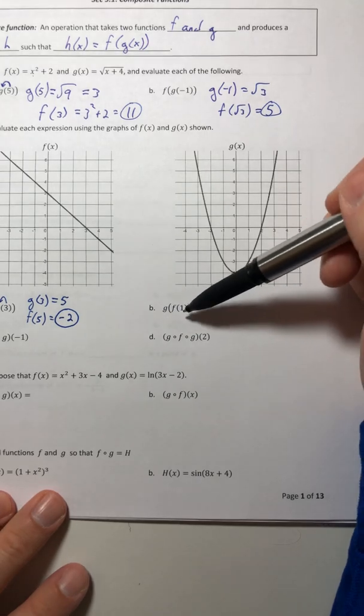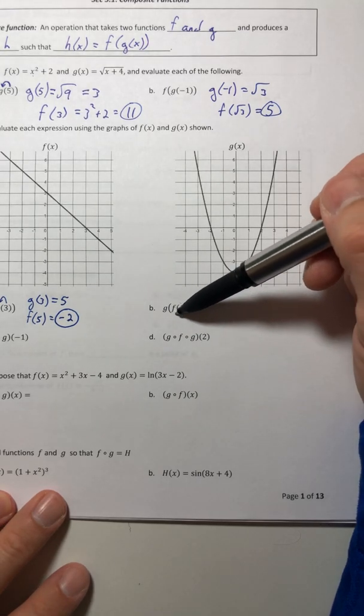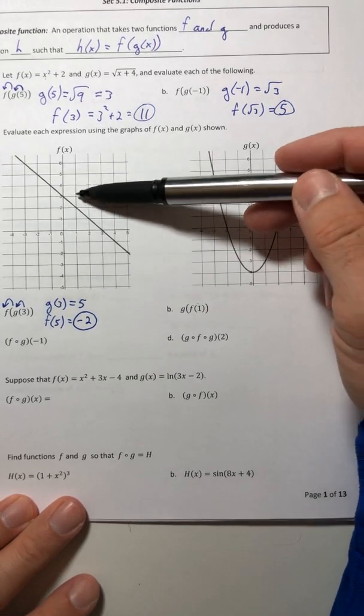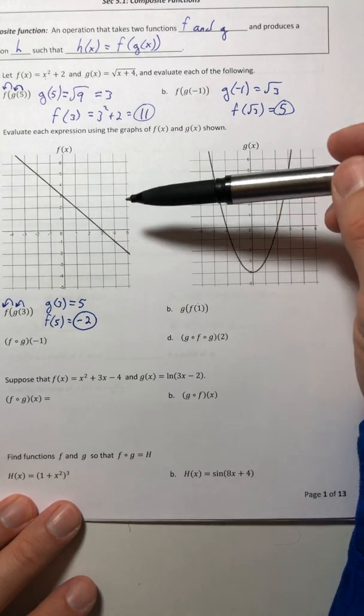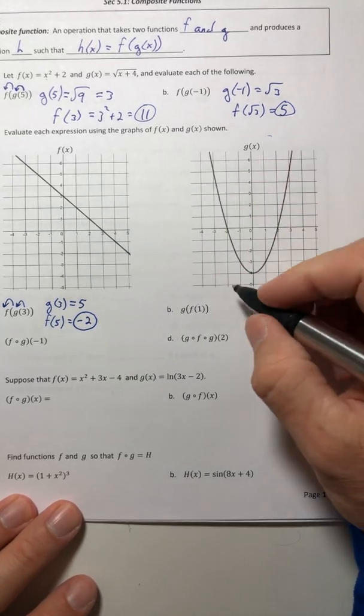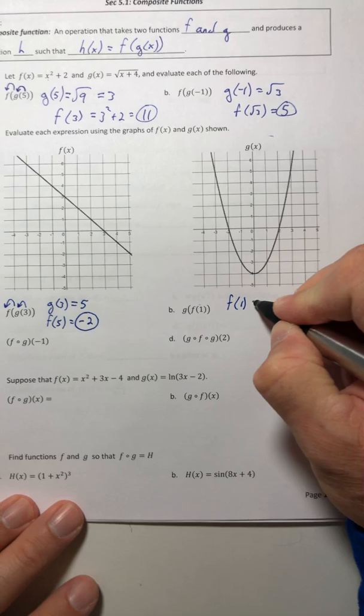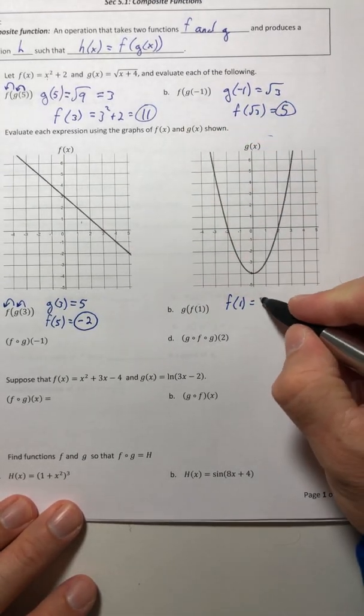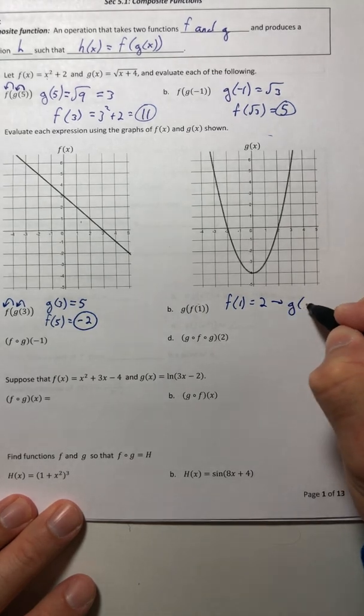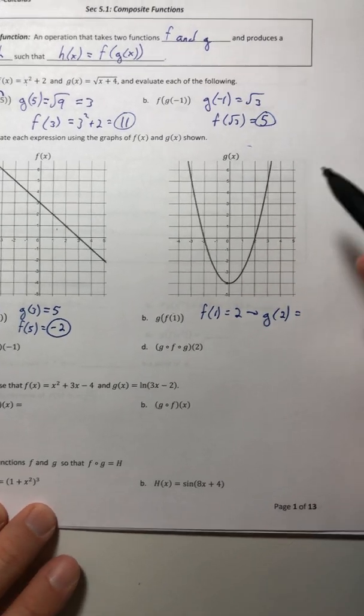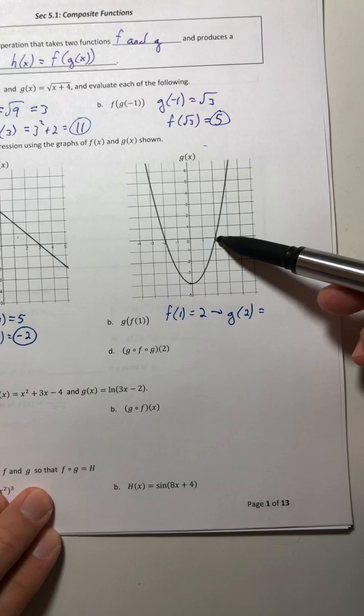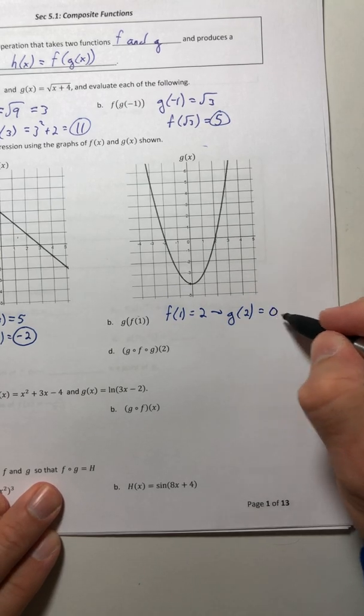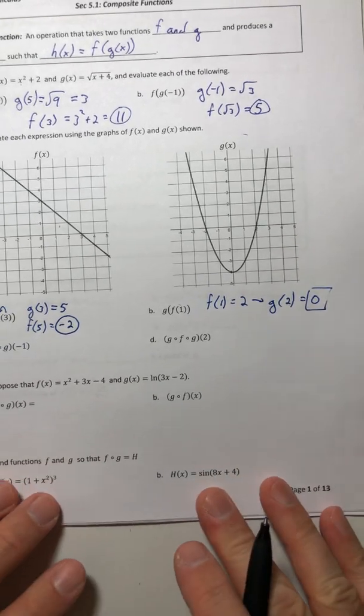On example b, the first thing we have to do is f(1). So we're on this graph over here to start. When x is one, y is two. Then you can move over to the g graph. When x is two, the y value is zero. And there's your answer.